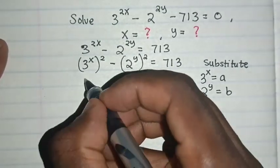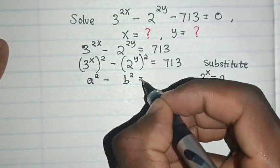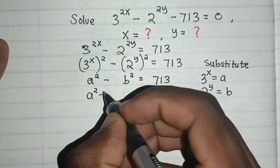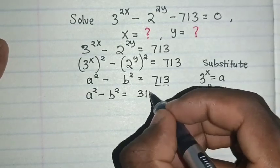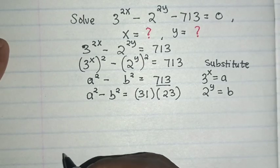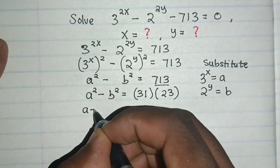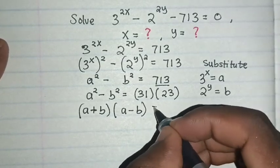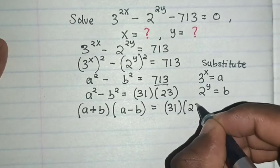So here it will be a² - b² = 713. So a² - b² = 31 × 23. So from our formula, it will be equal to (a+b)(a-b) = 31 × 23.